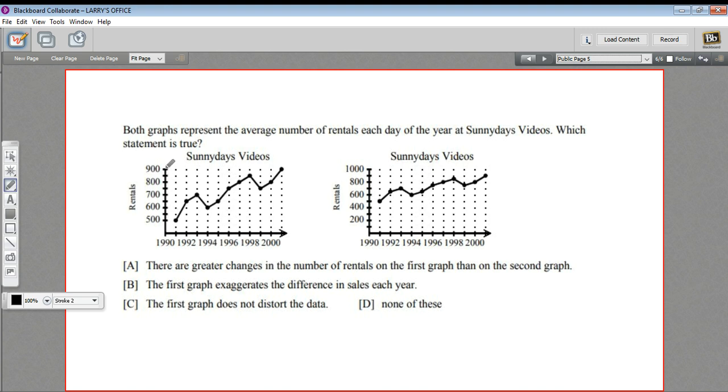You'll notice this scale goes from zero up to a thousand. Here we've got from 500 to 900, so this is sort of like a close-up view. Each tick mark here is in units of 100—200, 300, 400, 500. Here it's in 50—500, 550, 600, 650. So what that means is that in this graph, the changes look a lot bigger than they look in this graph.